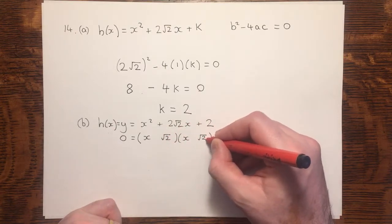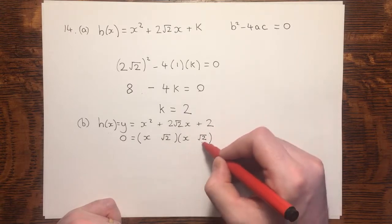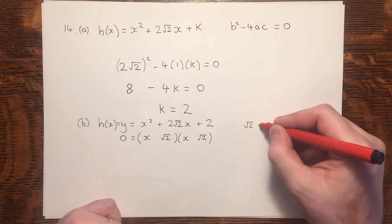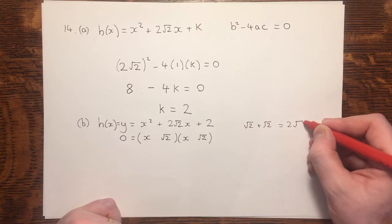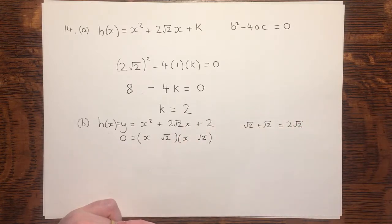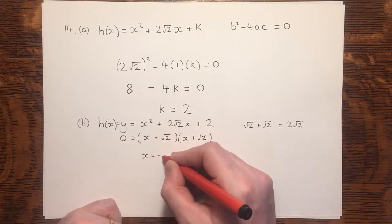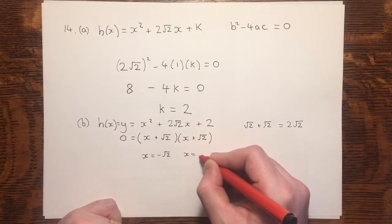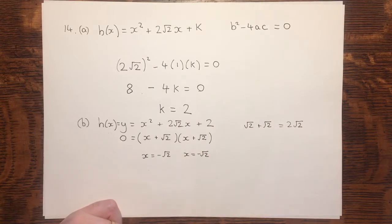√2 times √2 is 2. √2 plus √2 is the same as 2 lots of √2, which is what we've got as our coefficient there, our value of b. And these are both positive. Solving these both gives us the same solution because they're identical brackets, and we have that x equals -√2. So now I can sketch.